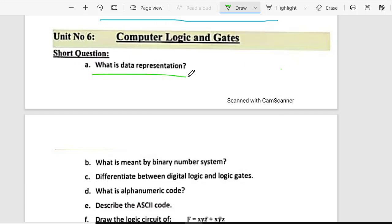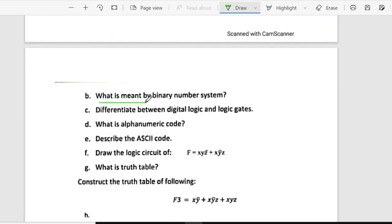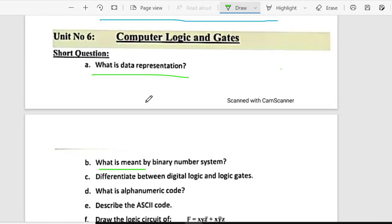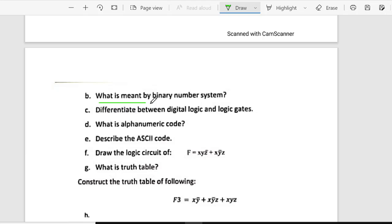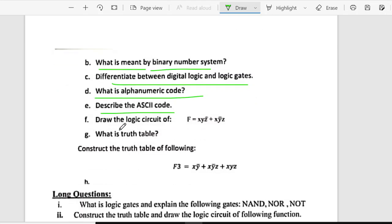Short question, what is data representation? B is, what is binary number system? C is differentiate between digital and logic gates. D is, what is alphanumeric code? E is, describe the ASCII code. Draw the logic circuit of this one. Or, what is truth table? Or, construct the truth table of the following.